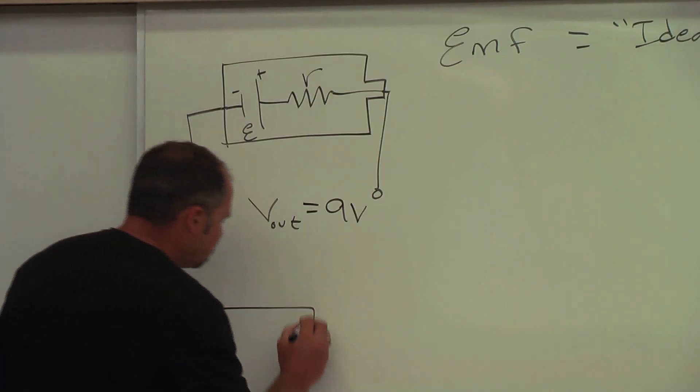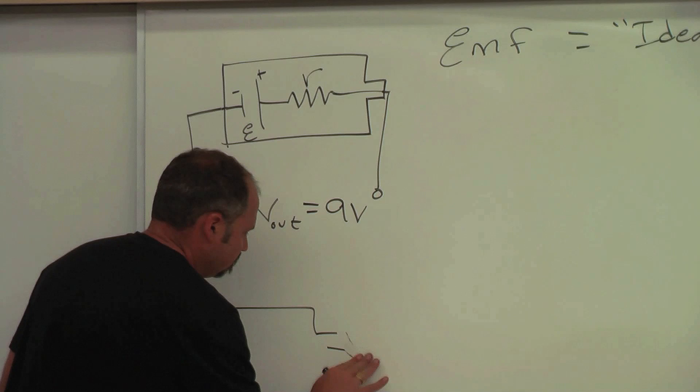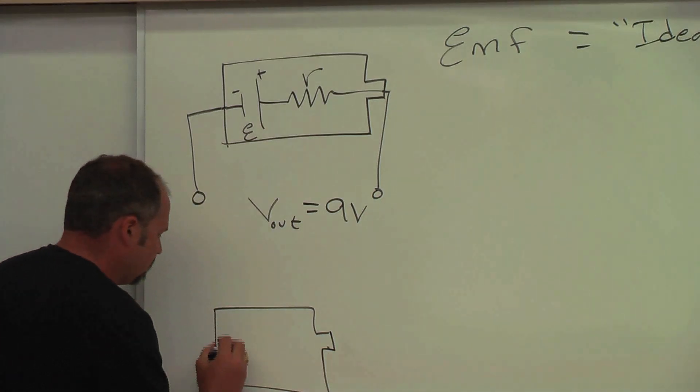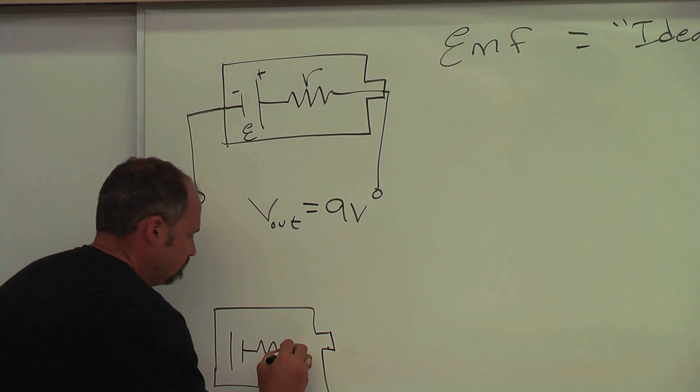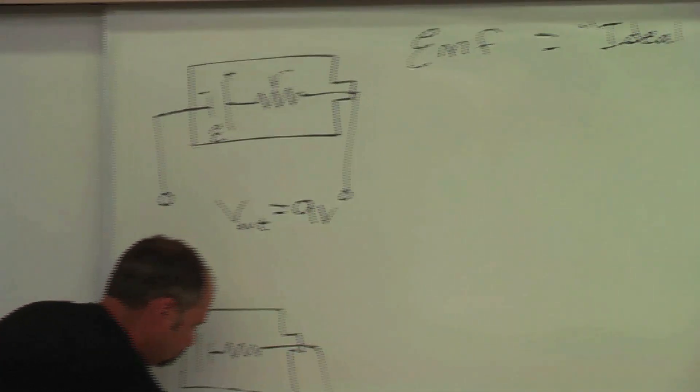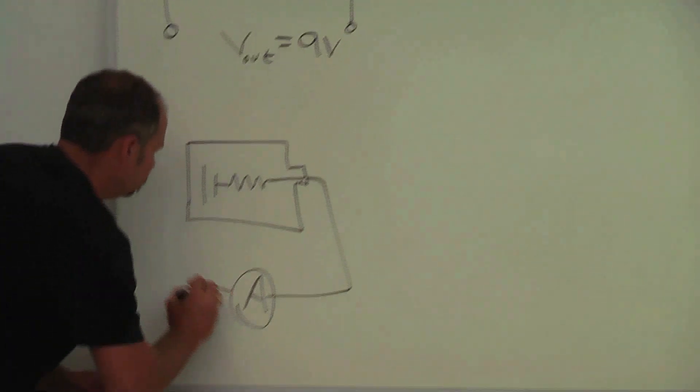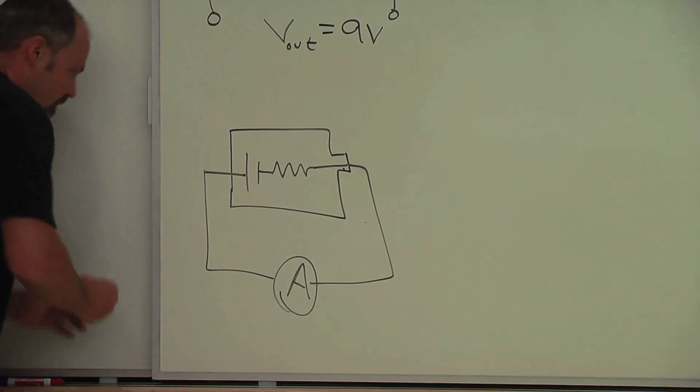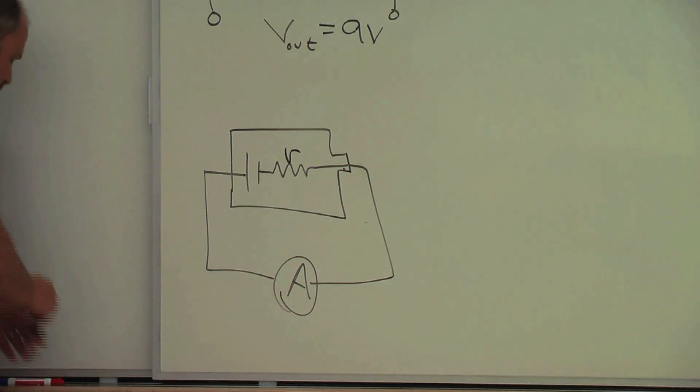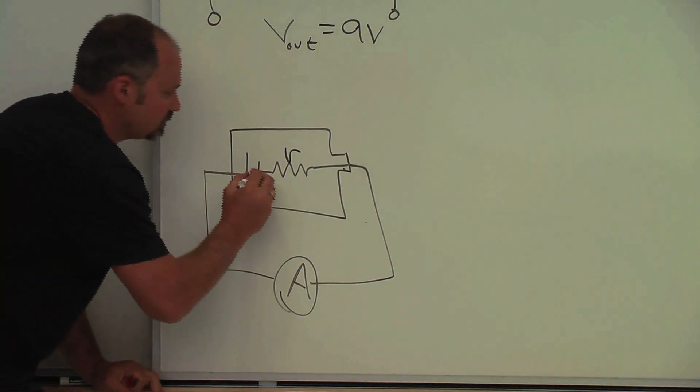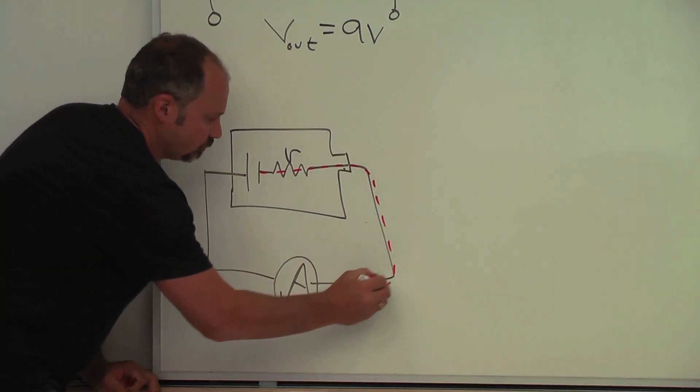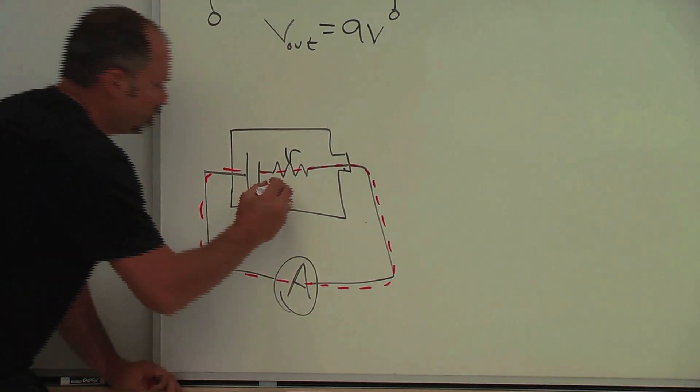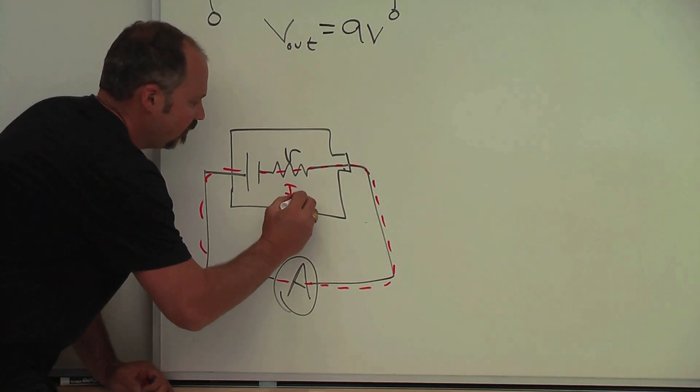Now, when you connect it to a circuit, it'll look like this. Here's our ammeter, something like that. Now, here's our internal resistance R. So the current is now flowing through the internal resistance of the battery and back home,